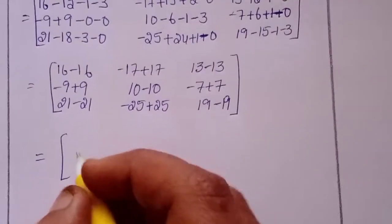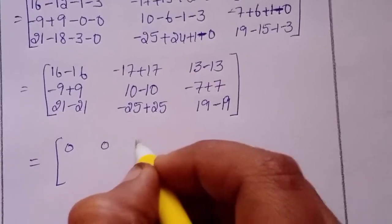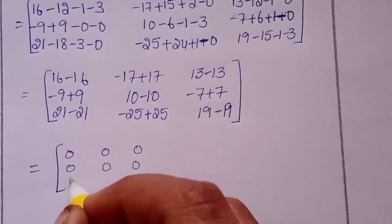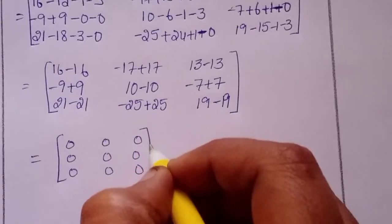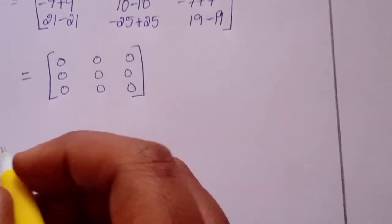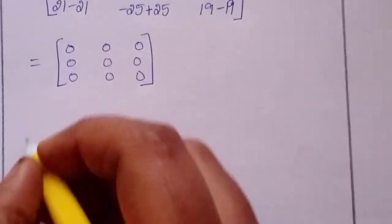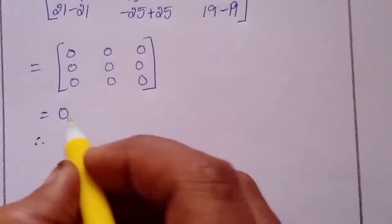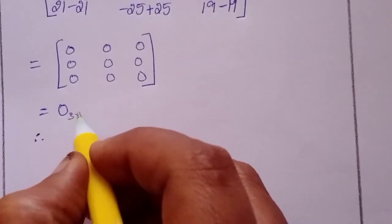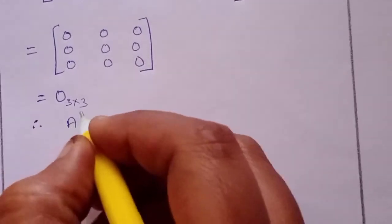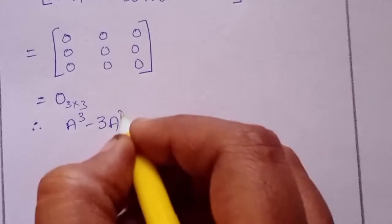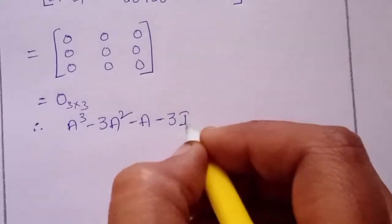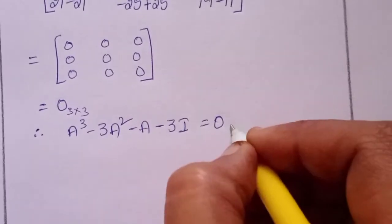All entries equal zero: [0,0,0 / 0,0,0 / 0,0,0]. Therefore it is the zero matrix of order 3. Hence A cubed minus 3A squared minus A minus 3I equals 0.